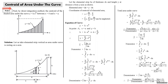Find by direct integration the centroid of the shaded area under the curve y = kx^n between x = 0 and x = a. The shaded area is shown in the diagram. We label the origin as O, and the points as B and A. The equation of the curve is y = kx^n. As the area under the curve is resting on the x-axis, we take the elemental strip vertical — of thickness dx at a distance x from the y-axis.